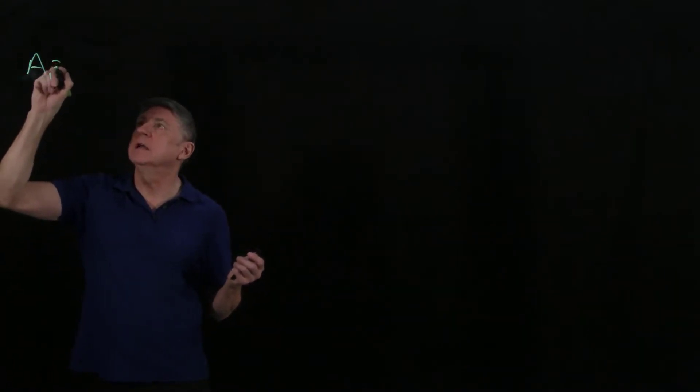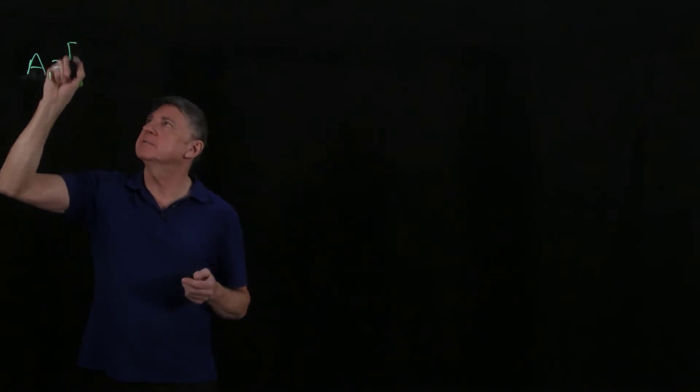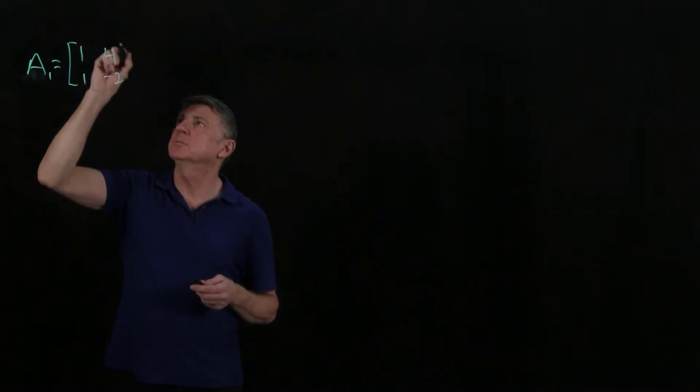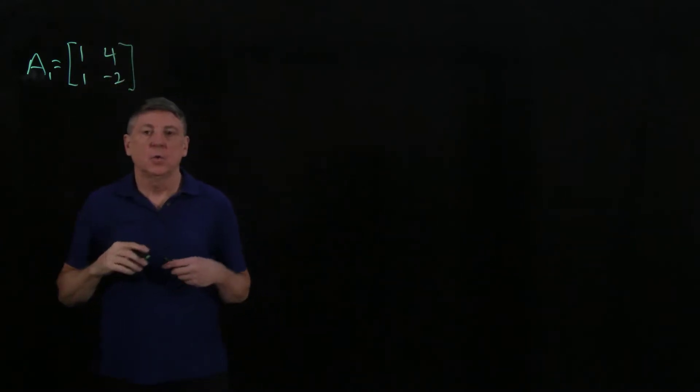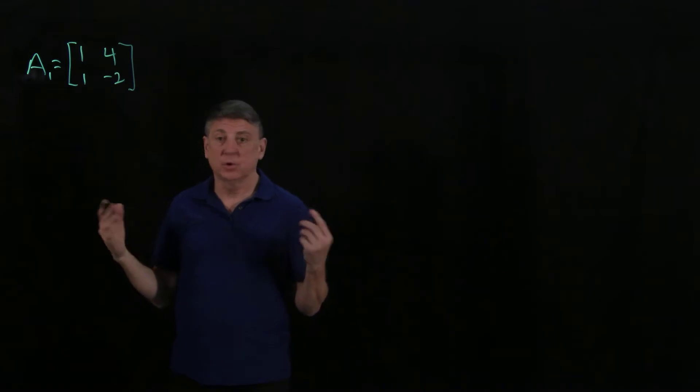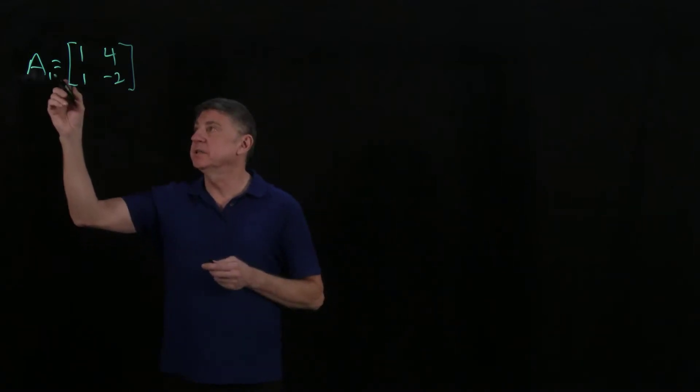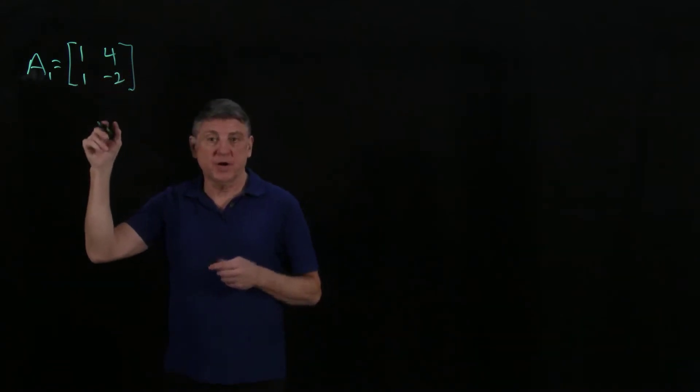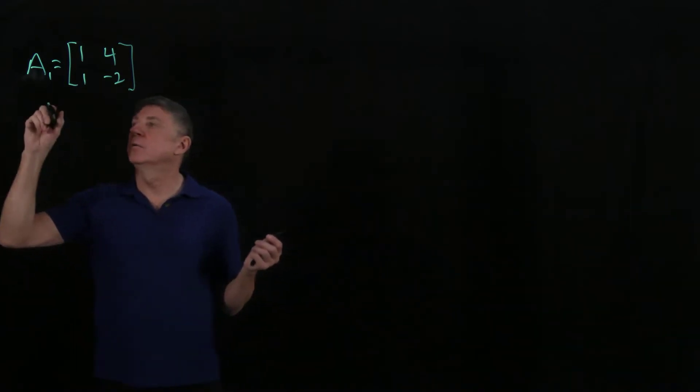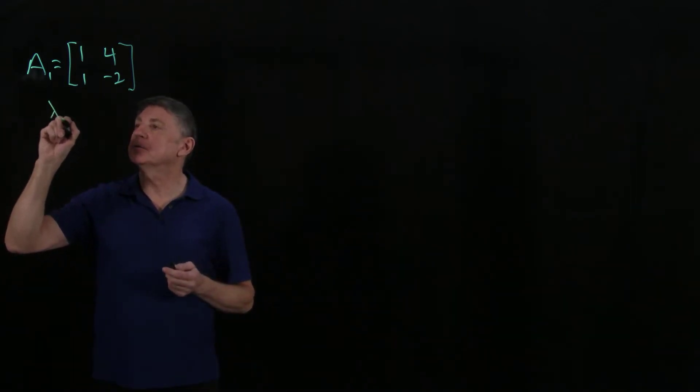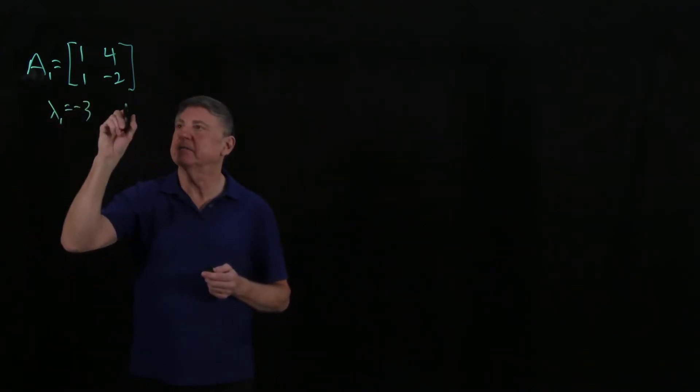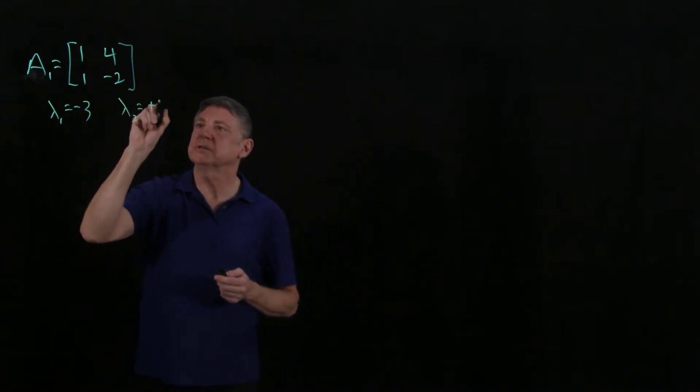We'll call this matrix A1, and suppose that its first column is 1, 1, and its second column is 4, minus 2. When we work through the eigenvalues, one way we could do this is to take the determinant of A1 minus lambda times the identity, and we would get a quadratic equation. When we do that, we find that the first eigenvalue is minus 3, and the second eigenvalue is plus 2.